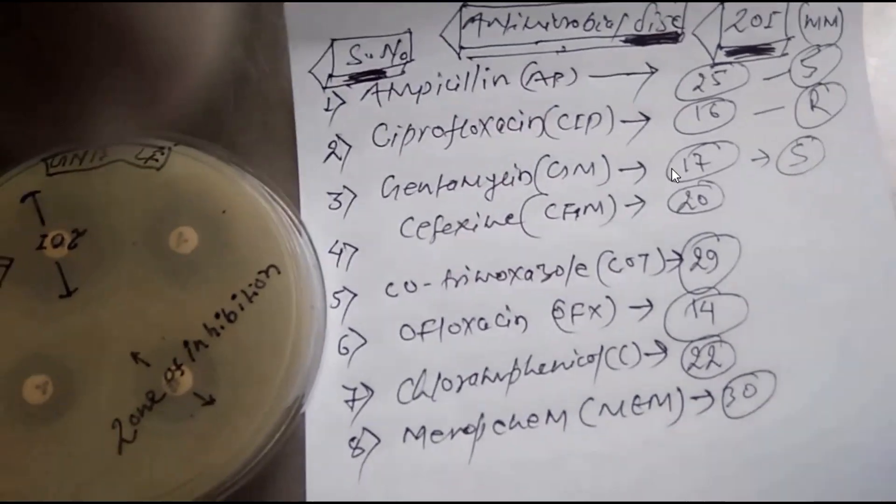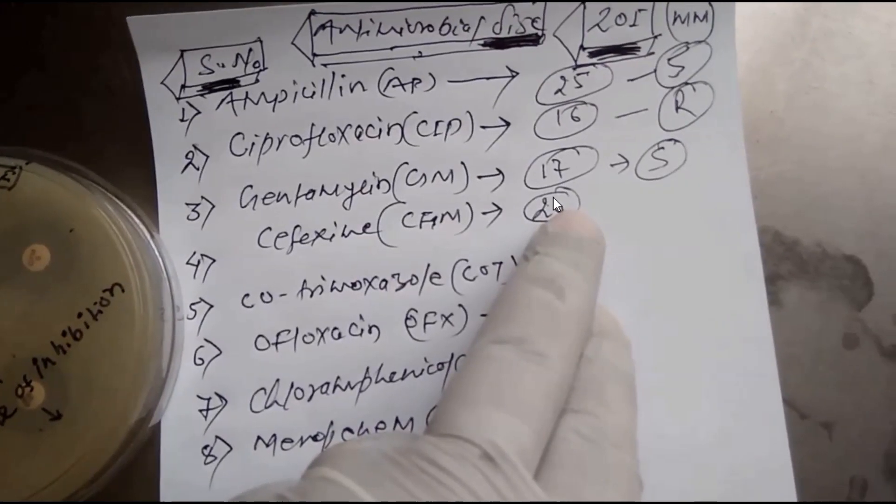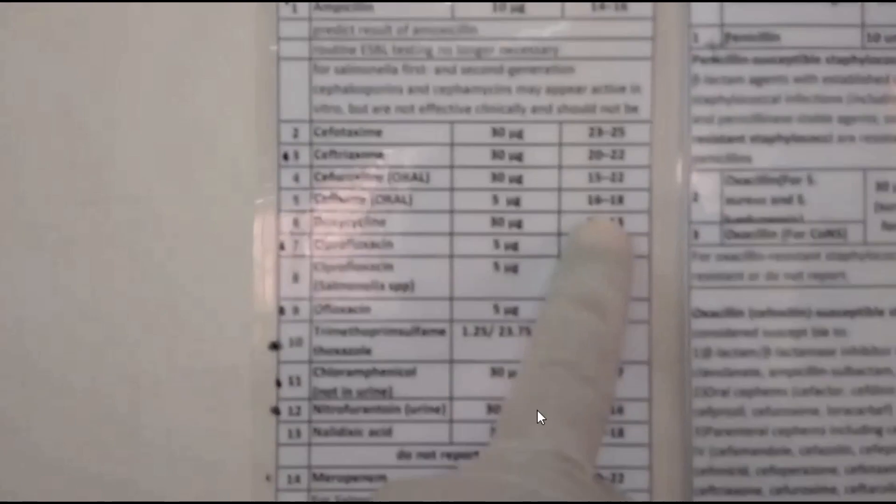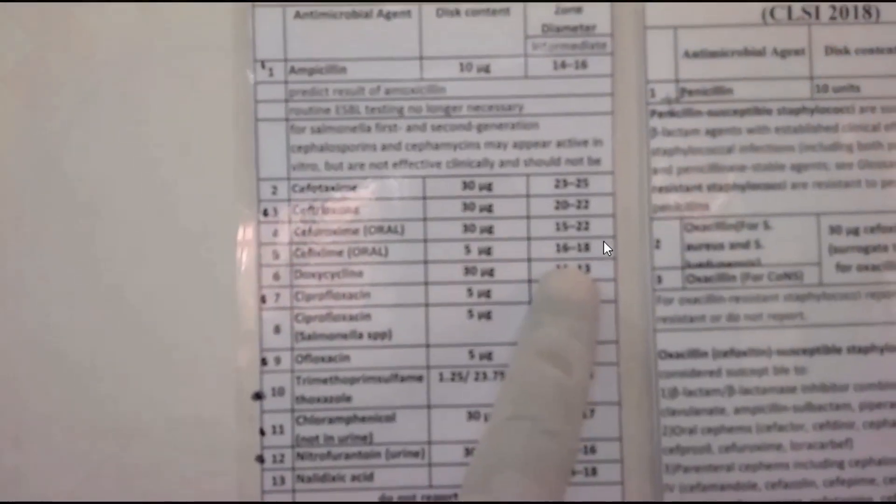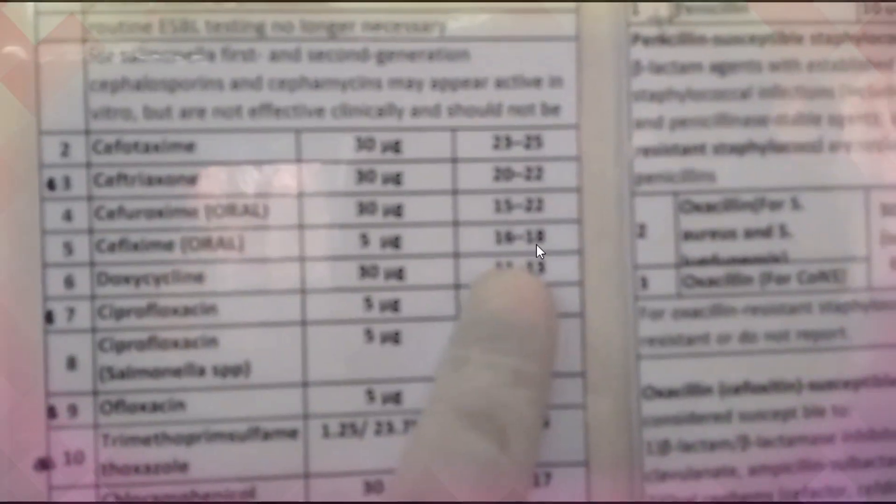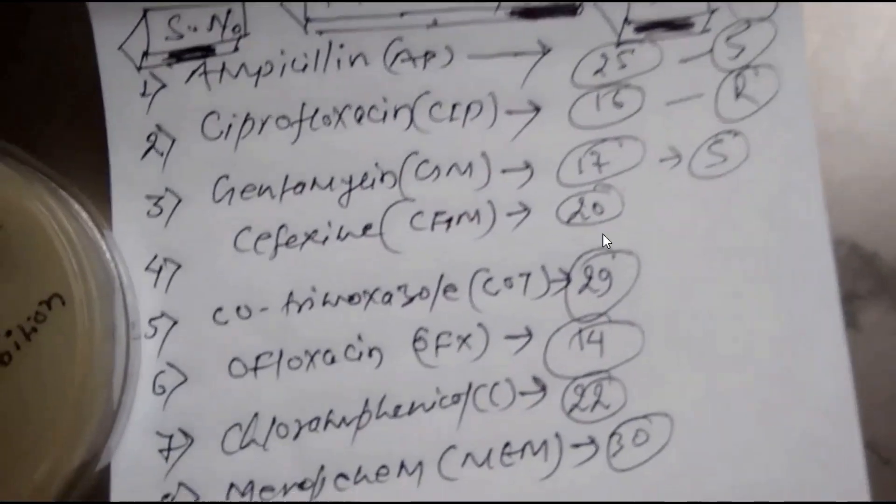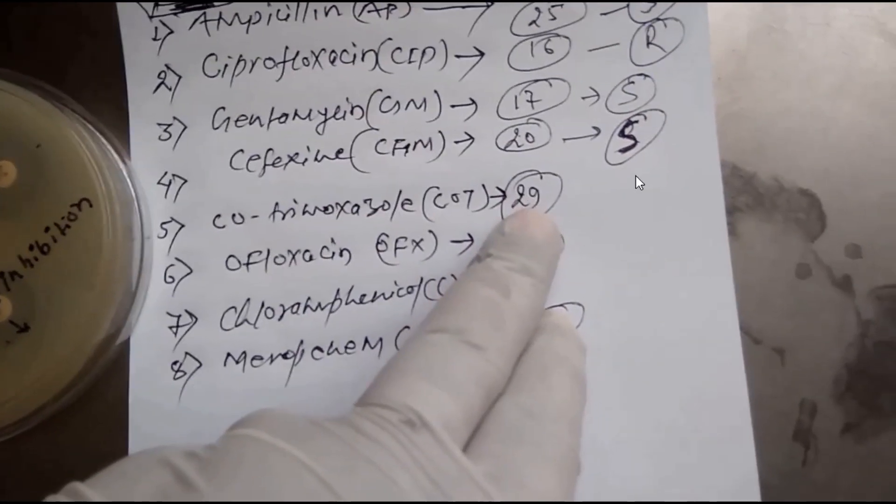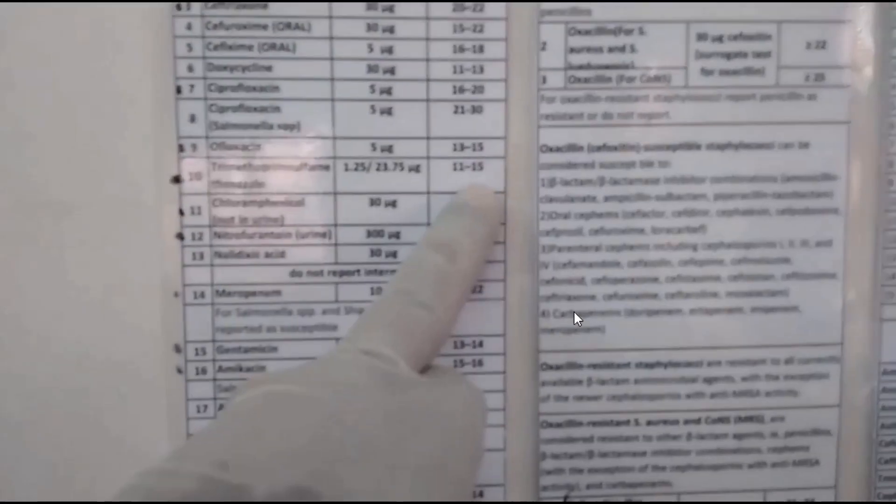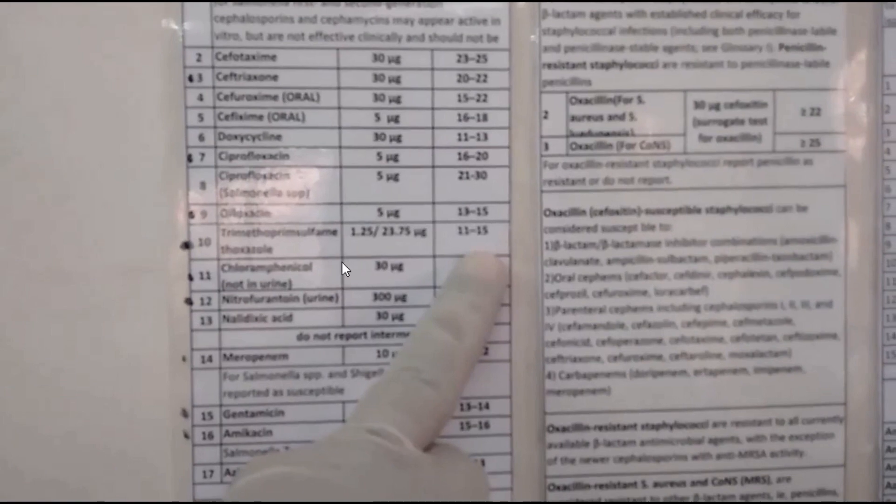Zone of inhibition for Cefixime is 20 mm. Now compare this one with the chart. Here you can see to be sensitive, it must be more than 18, but here we have 20, that's why it's sensitive.